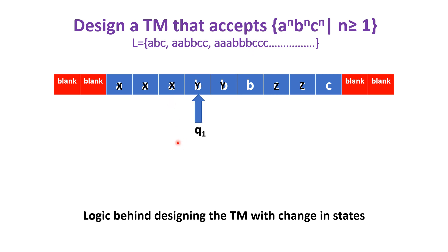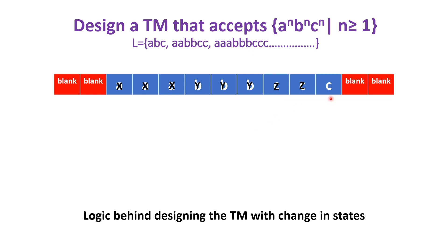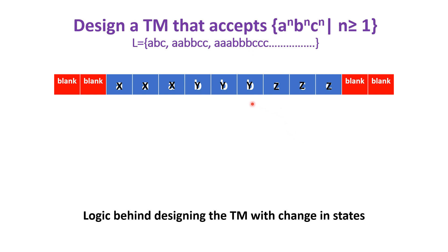Change the state from Q0 to Q1, replace A by X, and move towards the right until you get a B. Once you get a B, replace B by Y, change the state from Q1 to Q2, and move towards the right until you get the first C. Once you get C, replace C by Z. This is the third set of A, B, C replacing as X, Y, Z. Change the state from Q2 to Q3 and move towards the left until we get the first X, keeping the input symbols as they are and staying in state Q3. This completes the third cycle.